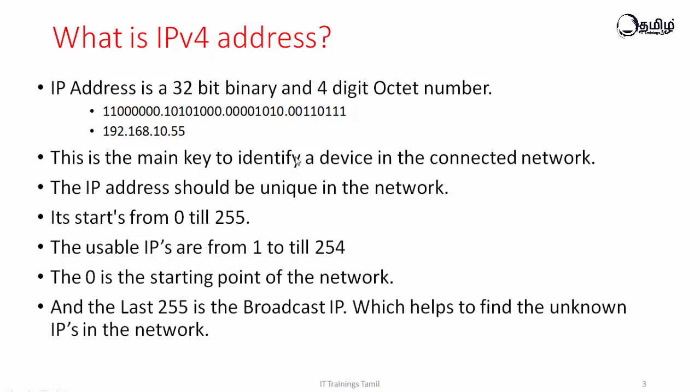As mentioned in the previous video, the network ID is in that area. For example, the IP address 192.168.10.0 is the network address, and 192.168.10.1 is the first usable IP. The 0 IP is the hidden network IP. The network address is the starting point — that is the 0 address.